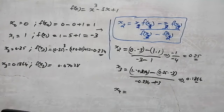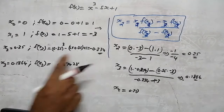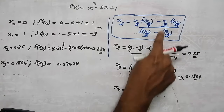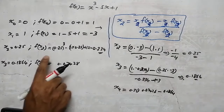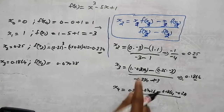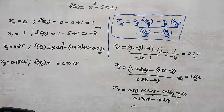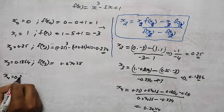Substitute for x₄: x₂ is 0.25, f(x₃) is 0.07428, x₃ is 0.1964, f(x₂) is minus 0.234, all divided by f(x₃) minus f(x₂) = 0.07428 minus (minus 0.234). We get x₄ equal to 0.20164.